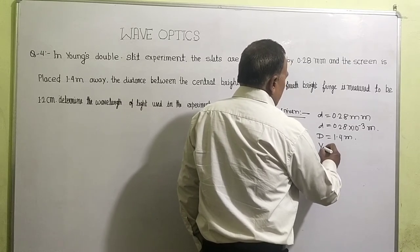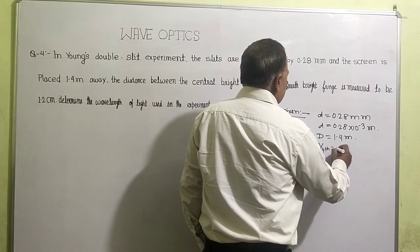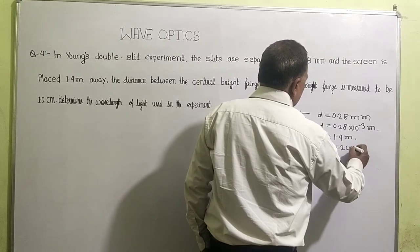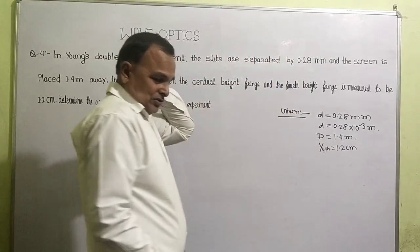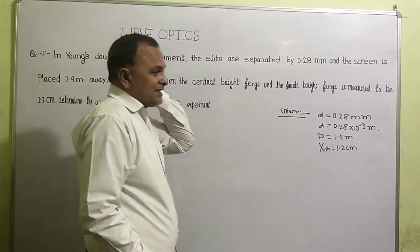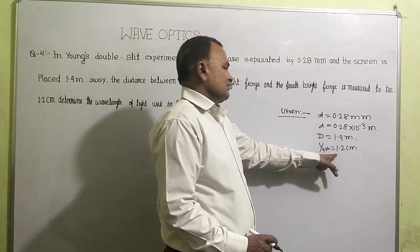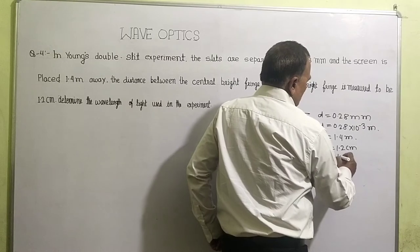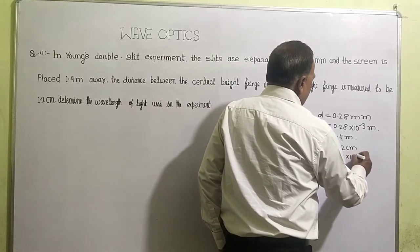It means y4th bright is given 1.2 cm, 1.2 cm, that means 1.2 × 10^-2 meter.